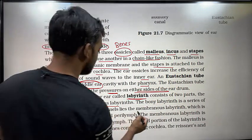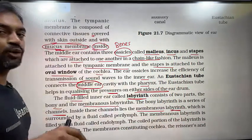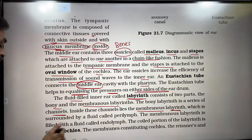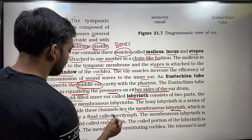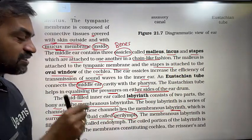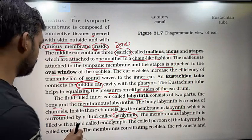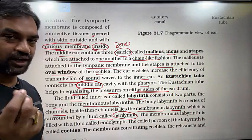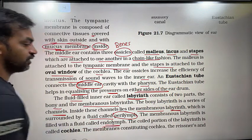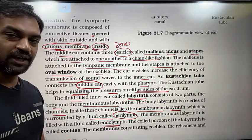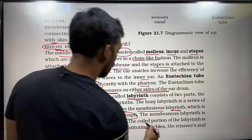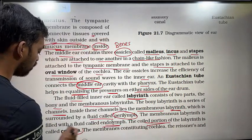Inside the bony labyrinth channels lies the membranous labyrinth, which is surrounded by a fluid called perilymph. The membranous labyrinth is filled with a fluid called endolymph.